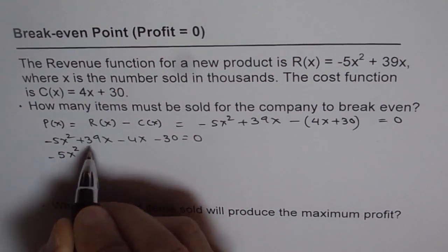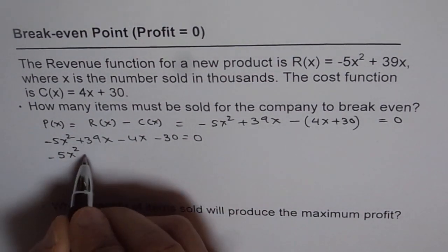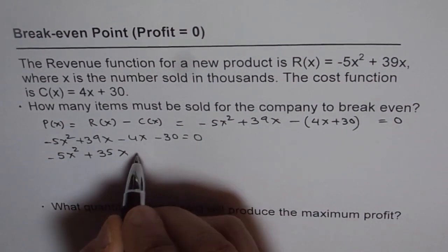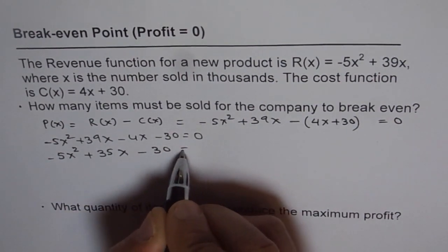We have minus 5x², 39 minus 4 is 35x, minus 30 equals 0.